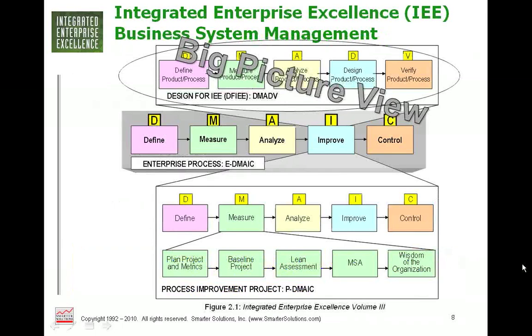Let's look at the big picture. In the Integrated Enterprise Excellence system, we talked about the enterprise process — our enterprise-to-make system, a nine-step business system. Whenever we get to the improve phase, we can either take on process improvement projects, described by the Define, Measure, Analyze, Improve, Control roadmap, or we can go in and do a design process. That's where we're focusing primarily — dealing with Design for IEE, or what some people call Design for Six Sigma.